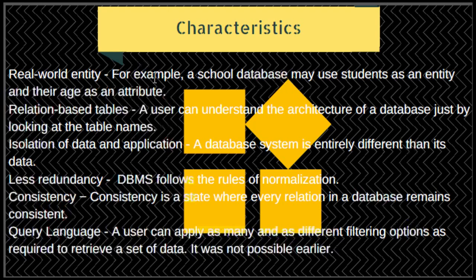The first characteristic of a DBMS is that it is inspired by real-world examples. For example, a school database may use students as an entity and their age as an attribute. A modern DBMS uses real-world entities, behaviors, and attributes to design its architecture. The second characteristic is relation-based tables: DBMS allows entities and relations among them to form tables, making it easier to understand the database just by looking at table names.